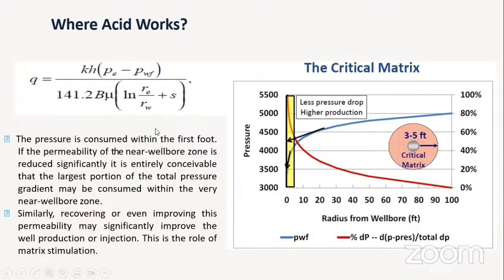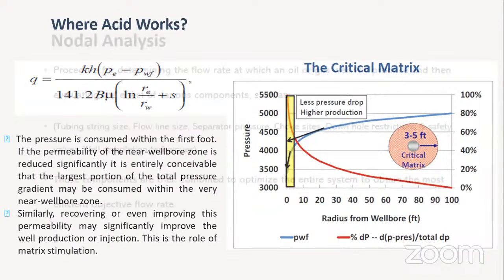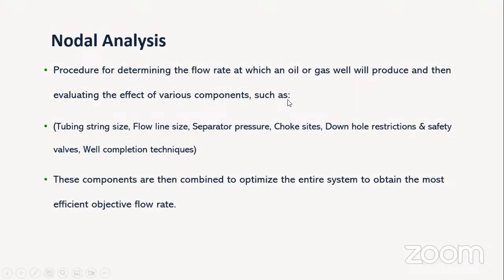In our Darcy equation, skin is mainly concentrated around the near-wellbore area — that's where most production loss occurs due to the pressure drop in the drawdown. During acid stimulation, we work mainly on this critical matrix area, which extends around three feet to a maximum of five feet in some stimulation jobs — sometimes just inches around the wellbore. We can get a significant gain in production just by treating this area.